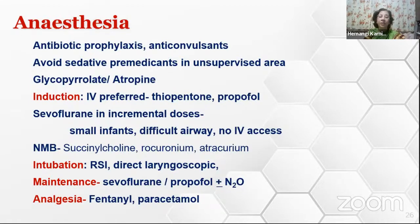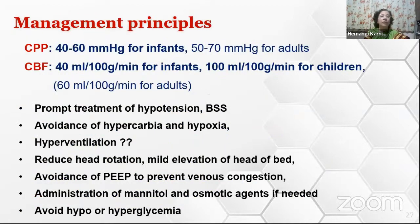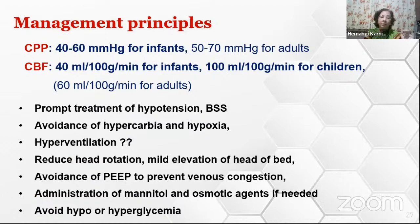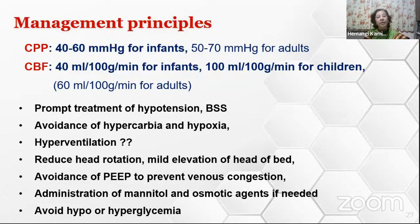Succinylcholine may be used but is not preferred nowadays unless absolutely mandatory. Fast intubation may be achieved using rocuronium or atracurium. Some patients will require rapid sequence intubation, but not all—if adequate starvation is ensured and stomach is emptied, regular intubation may be done with direct laryngoscopy. Maintenance can be either inhalational or propofol infusion with or without nitrous oxide, depending on age and condition. Analgesia will be a combination of opioids and non-opioids. We must ensure adequate cerebral perfusion—in infants, cerebral perfusion pressure and cerebral blood flow are lower than in adults; always treat hypotension promptly with balanced salt solution. Avoid hypercarbia and hypoxia as they will further increase ICP.